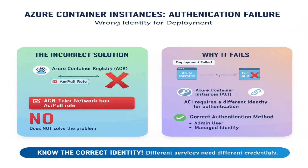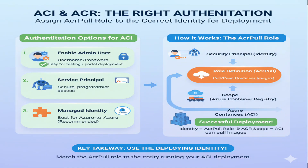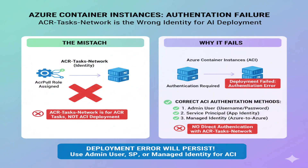This solution does not meet the goal because ACR Tasks Network is not the appropriate identity for container instance deployment authentication. Based on Azure documentation, Azure Container Registry requires authentication for all access, and there are specific methods for different scenarios. For deploying container instances from Azure Container Registry, you typically need one of these authentication methods: enabling the admin user, using a service principal with proper credentials, or configuring managed identity authentication. The AcrPull role itself is correct — it provides the necessary pull permissions — but it needs to be assigned to the right identity used during the container instance deployment process. ACR Tasks Network appears to be related to Azure Container Registry Tasks Networking, not container instance deployment authentication.